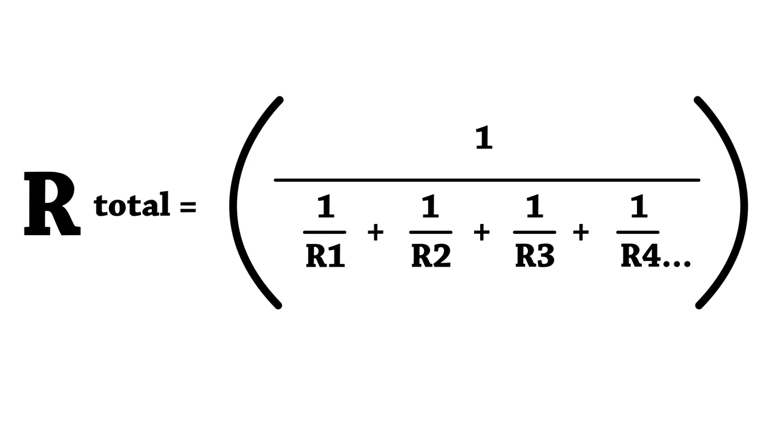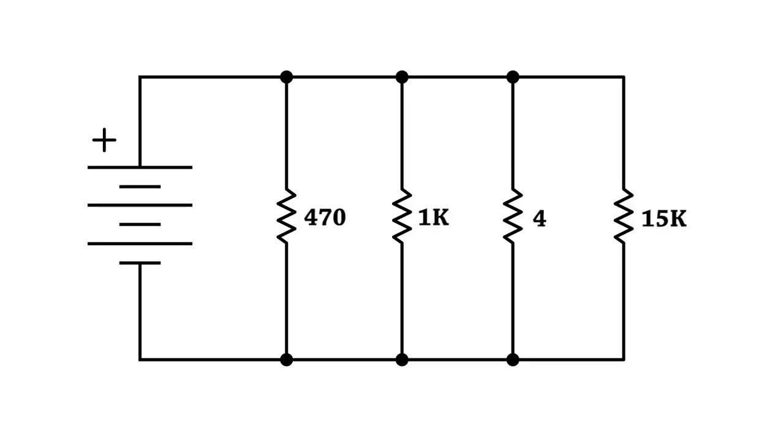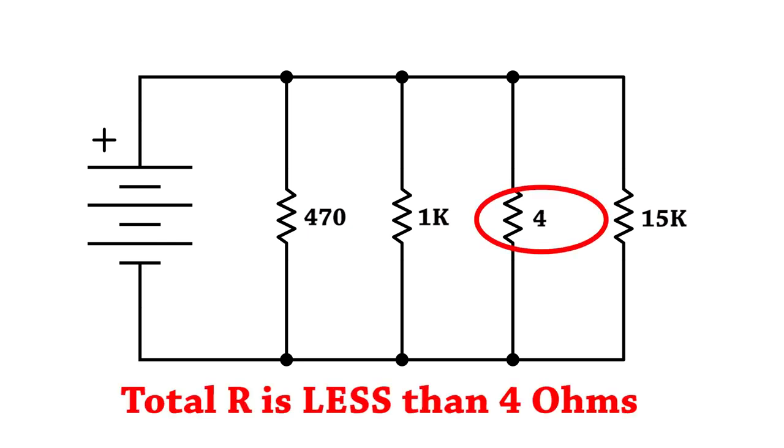Now I strongly recommend that before you just go reaching for your calculator and grinding through all these numbers, you get in the habit of looking at the resistor values and try to intuit approximately what the resistor value would be. And here's some hints on how to do that. Number one, with parallel resistors, the total resistance is always going to be lower than the lowest one in the group. So first look for the lowest one and understand that that's going to put you in the ballpark.